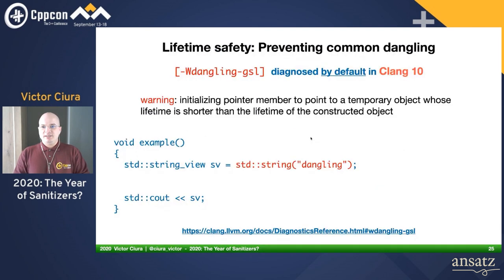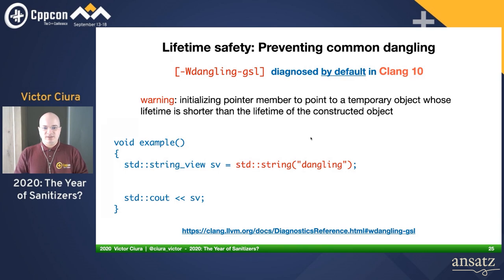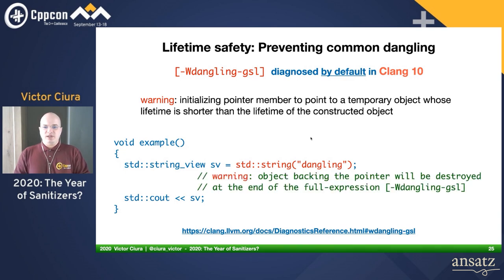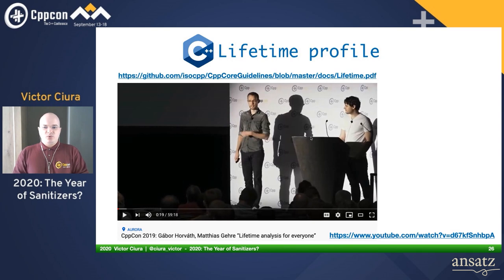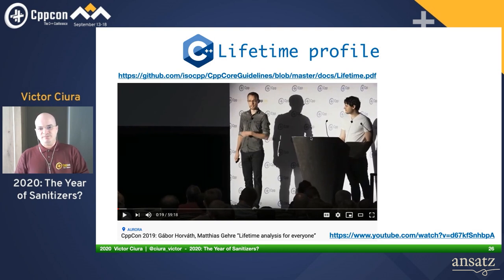For a while we've had an experimental flag `-wlifetime` in Clang that helps with this and can pinpoint misuses of StringView with a temporary. More recently in Clang 10, we actually have a built-in check diagnosed by default — `dangling-gsl` — which warns about the very same scenario, pointing out that the object bound to the StringView is a temporary and will be destroyed at the end of the expression. If you want to learn more about the Lifetime profile, I encourage you to watch the talk by Gabor and Mathias.